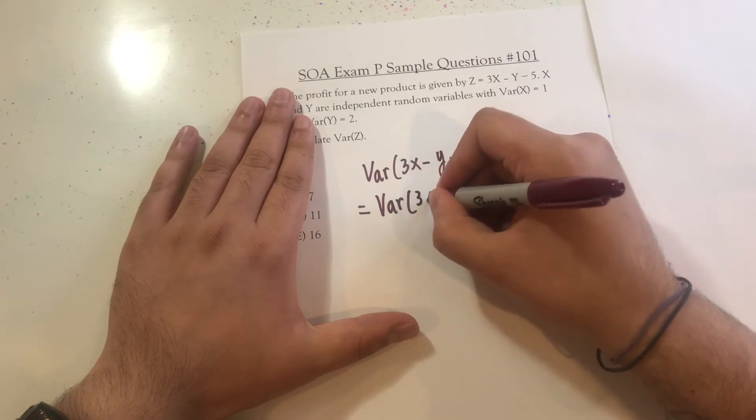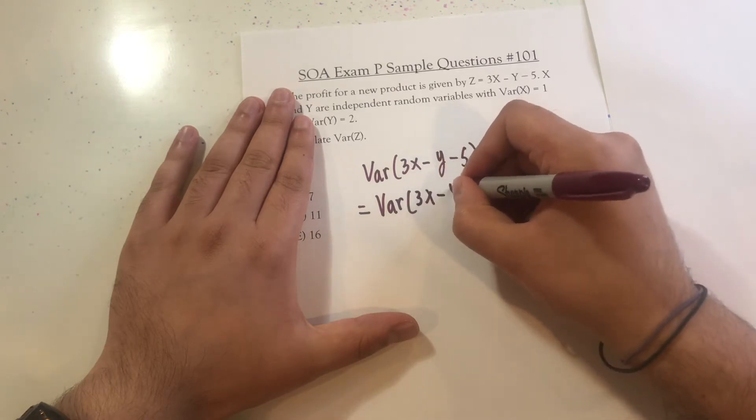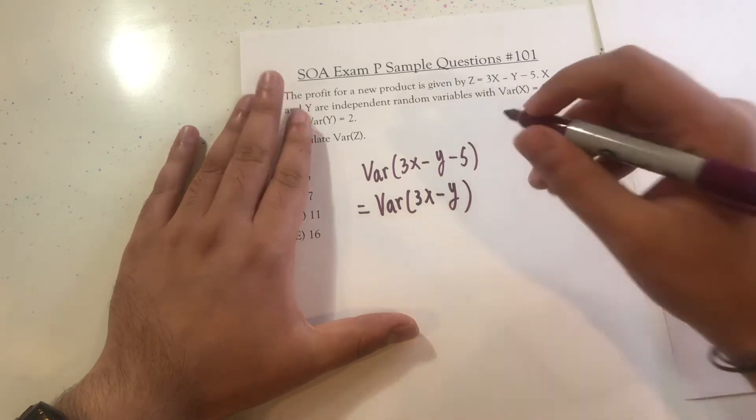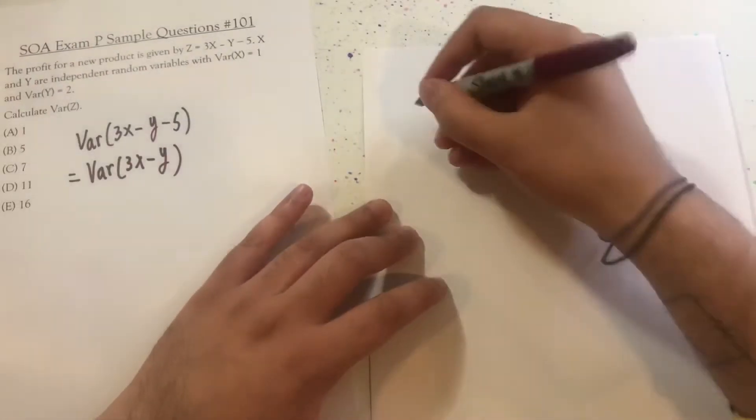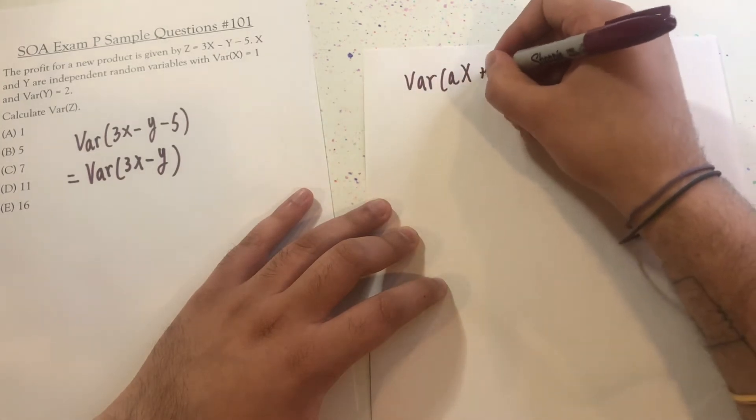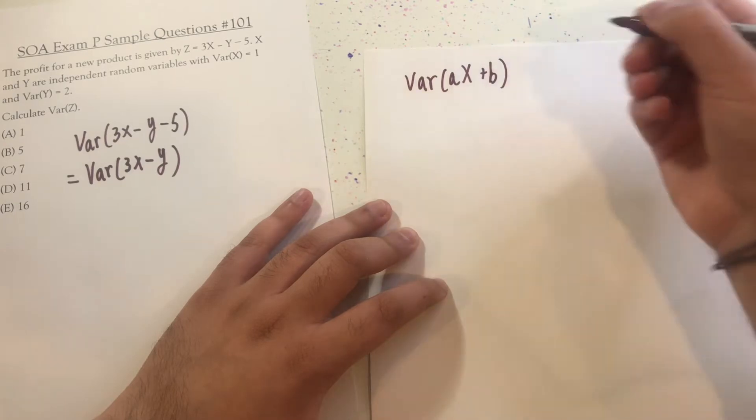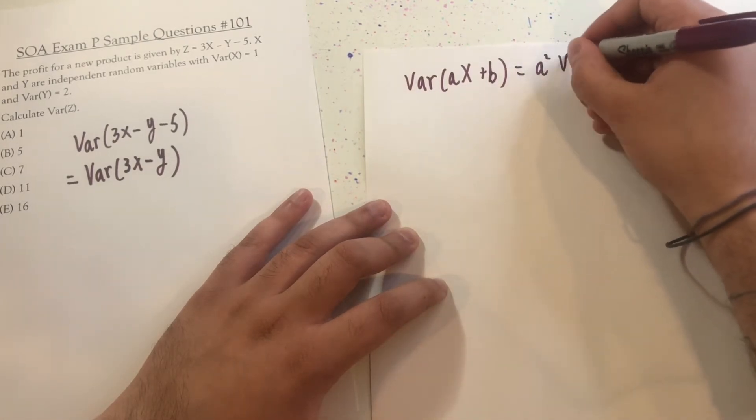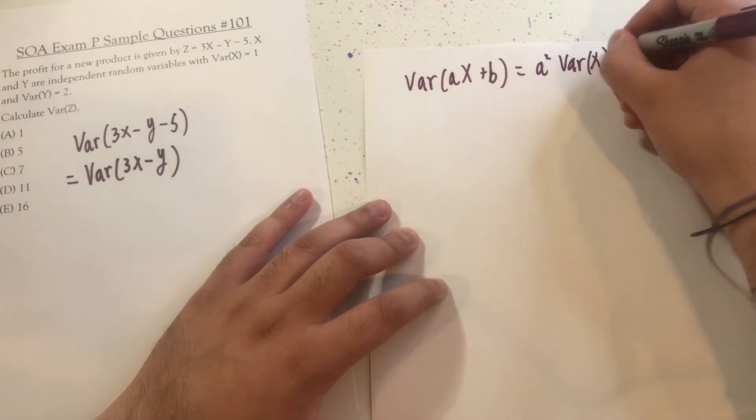Variance of 3X minus Y, right? And I'm getting that from the following rule. The variance of A times X plus B, where A and B are constants, is the following: A squared variance of X.